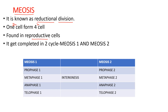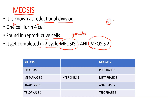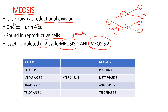Here one diploid cell forms four haploid cells. It is found in reproductive cells and helps in the formation of gametes. It is completed in two cycles: meiosis one and meiosis two. A diploid cell divides to form two haploid cells by meiosis one, then those two haploid cells divide to form four haploid cells by meiosis two.